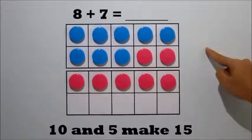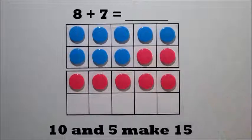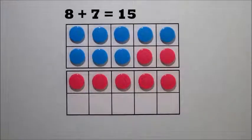10 and 5 make 15. So, 8 plus 7 equals 15. Do you have the same answer?